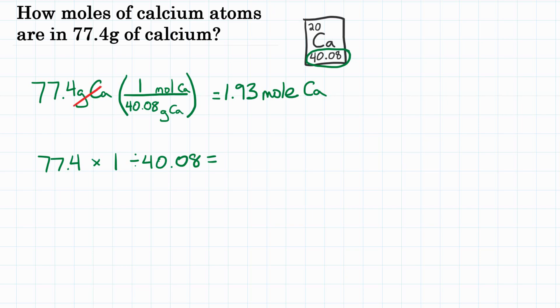Grams of calcium cancel out, and we are left with moles of calcium. So final answer for 77.4 grams of calcium is 1.93 moles of calcium. And a quick check you can do, well, 1 mole is 40.08. We have almost 80. That's about twice as much. So we should almost have twice as many moles. 1.93 is almost two times that.